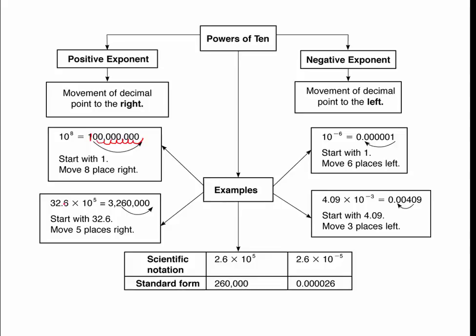If you are writing your number in scientific notation, you always want one digit and then the decimal point. That's a specific rule for powers of 10 written in scientific notation — there's always going to be one digit and then the decimal point.